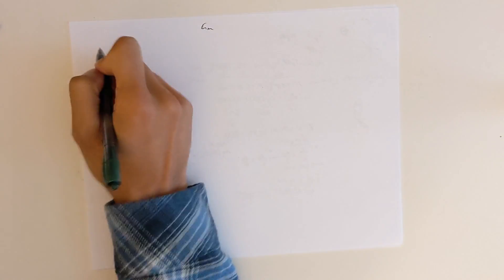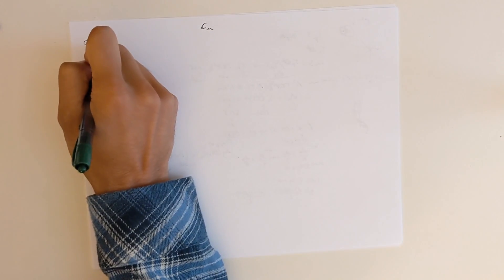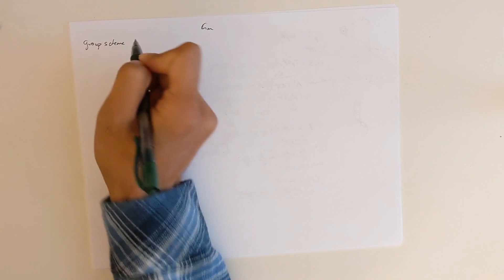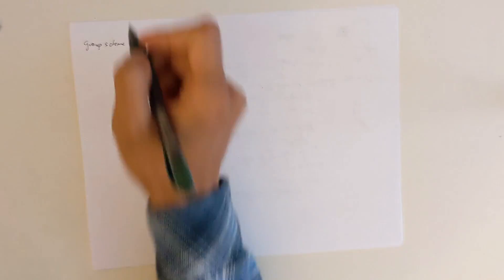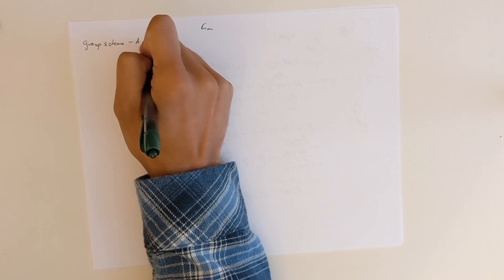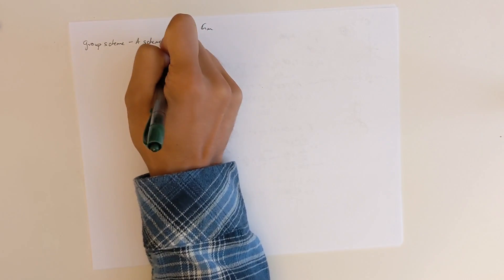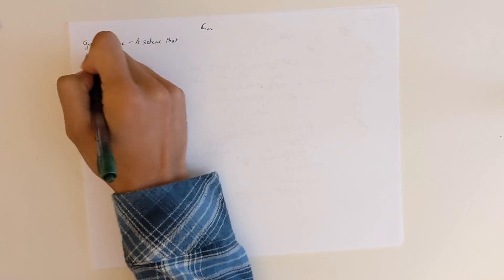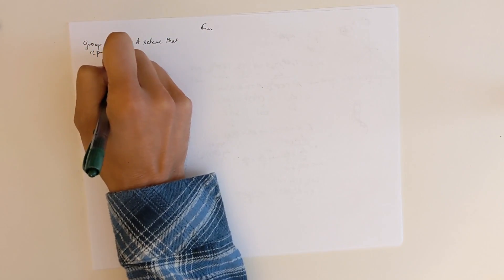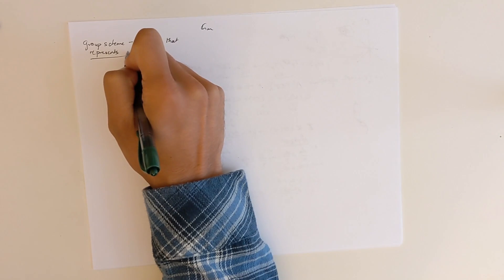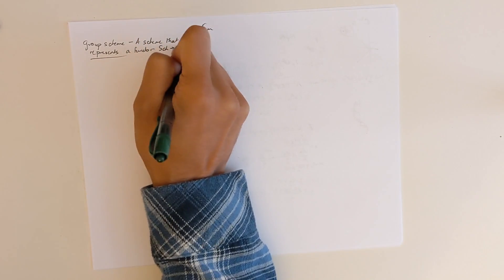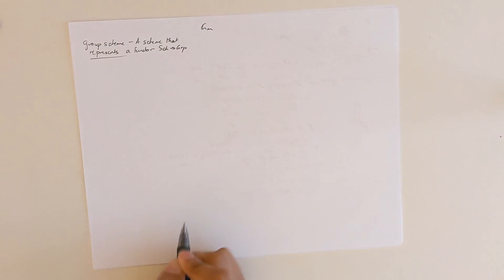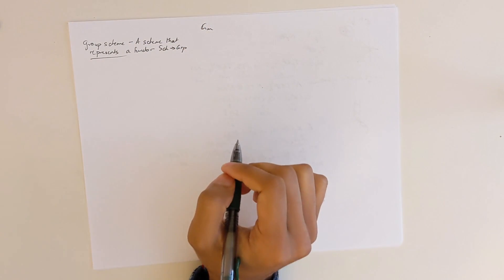So first, what is a group scheme? There are a lot of equivalent ways to define it, but the definition that I like, which gets the essence of it, is that it is a scheme that represents — and that's the important part — a functor from schemes to groups.